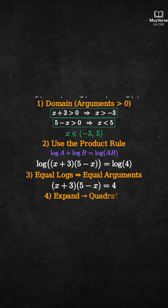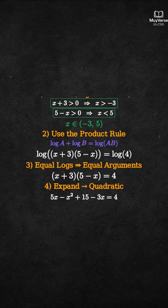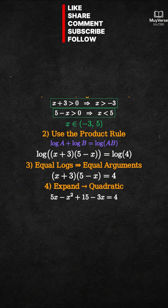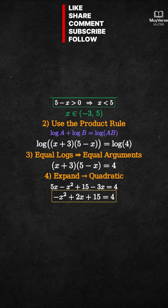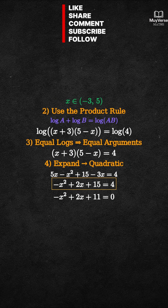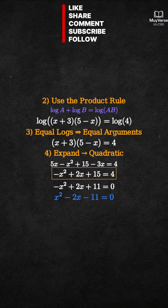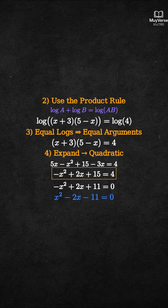Step 4: Expand and rearrange into a standard quadratic. Multiply using FOIL: 5x minus x squared, plus 15 minus 3x. That simplifies to negative x squared plus 2x plus 15, equals 4. Subtract 4 on both sides to get negative x squared plus 2x plus 11 equals 0. Multiply by negative 1 to make the leading term positive: x squared minus 2x minus 11 equals 0.